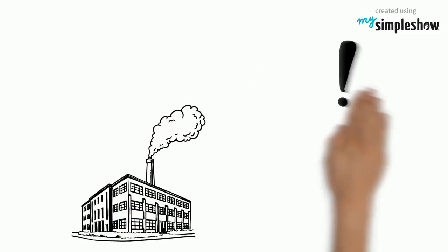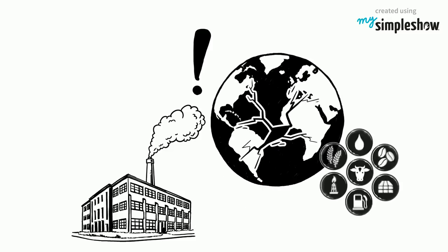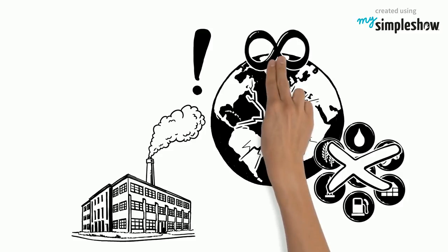Burning fossil fuels is one of the biggest factors of climate change and it's doing lasting damage to the earth. Once these resources are gone, there is no getting them back and their effects on the earth are mostly permanent.